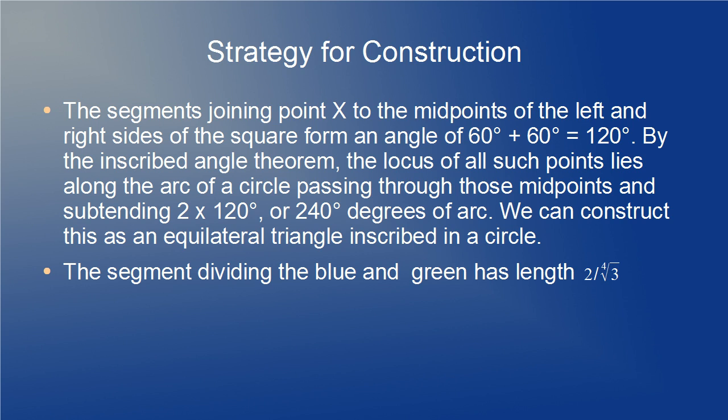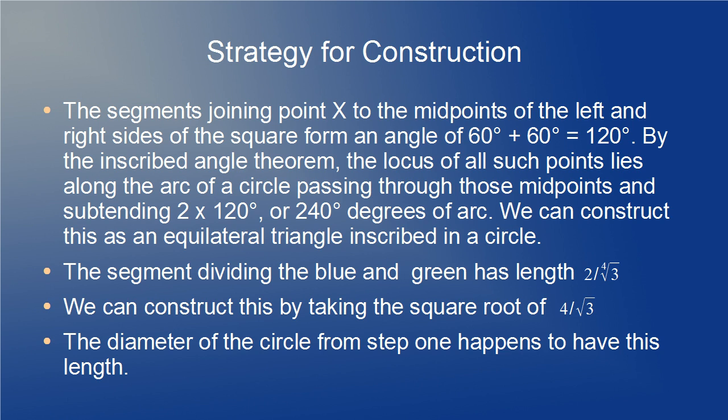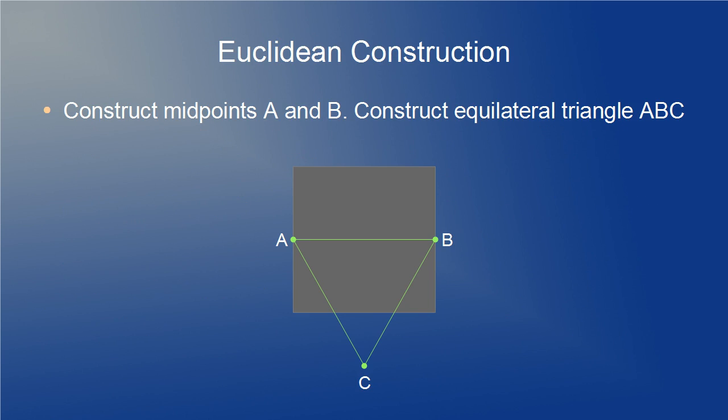Now let's combine this with the fact that the segment dividing the blue and green has length 2 over the fourth root of 3. We can construct this by taking the square root of 4 over root 3. That's an easy length to construct, and we get it for free because the diameter of the circle in the previous step has exactly that length. So here we go with the construction. I'll do the current step in green each time to highlight it.